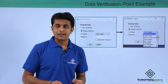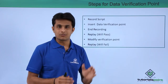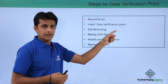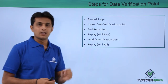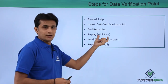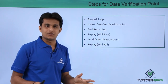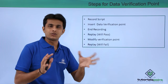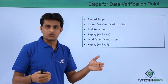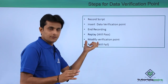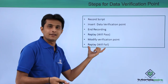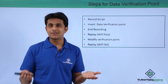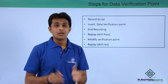Now for the practical, here are the steps we'll follow for the data verification point. First, we'll record a script; while recording, we'll insert a data verification point, then stop the recording. After that, we'll replay — since no changes are made, we'll get the result as passed. Then I'll modify the verification data point, change the elements, and compare expected versus actual. If I modify it, I'll get the answer as fail. When we get the fail result in the verification point comparator, I can identify how much was expected versus the actual.